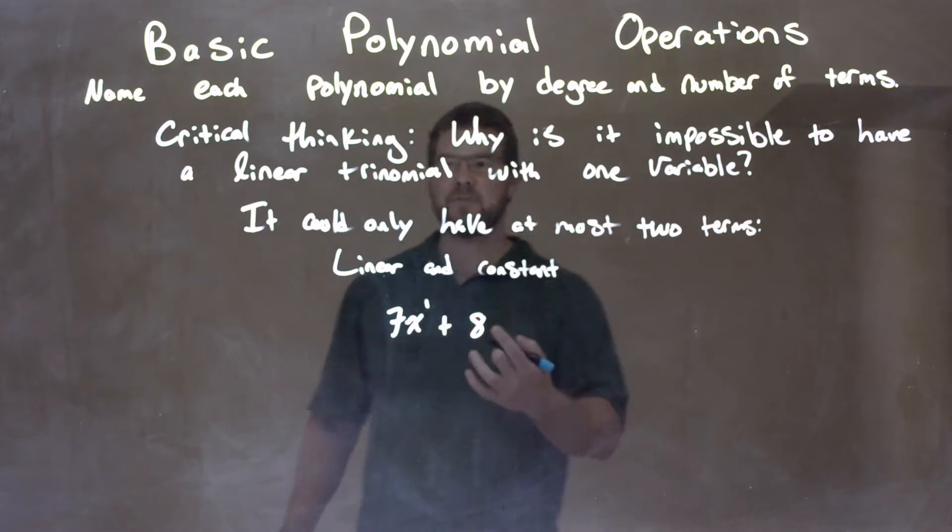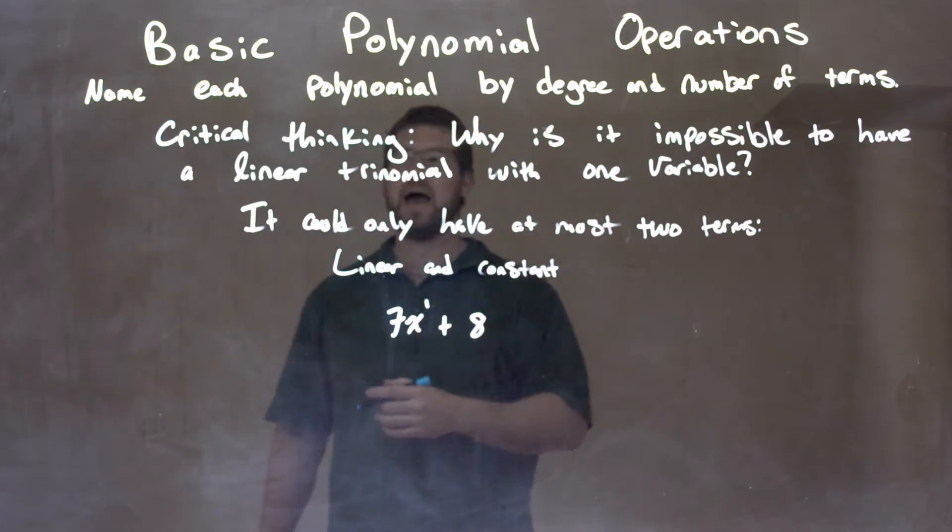So again, that's why it's impossible to have a linear trinomial with just one variable, okay? We would have to have, it couldn't be a trinomial, it would have to, at most could have two.